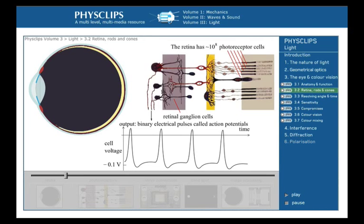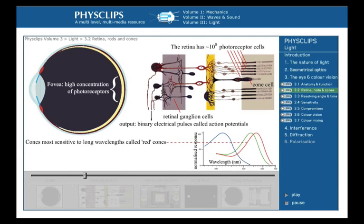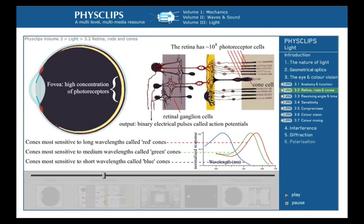Directly behind the pupil is a region called the fovea, a region with high concentration of photoreceptors. Photoreceptors with this shape are called cone cells. They come in three different varieties. One variety is the most sensitive to long wavelengths. We call these red cone cells. The cells themselves are not red rather they respond strongly to red. What we call green cone cells are the most sensitive to medium wavelengths and blue cone cells to short wavelengths. Cone cells give us our color vision. Cones are concentrated in the fovea so our central vision has the best color sensitivity.